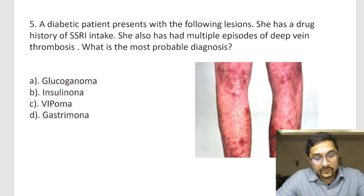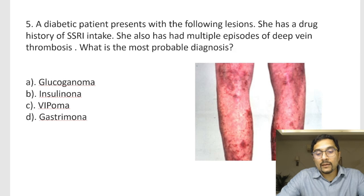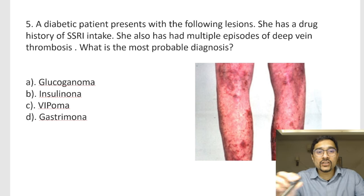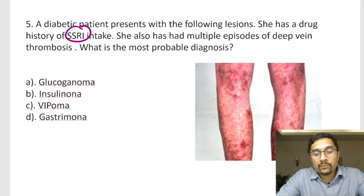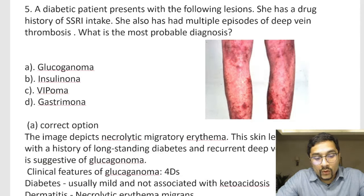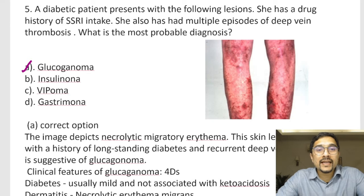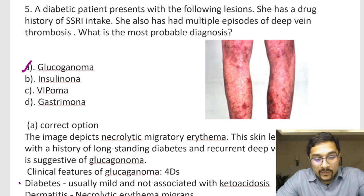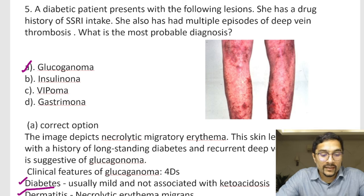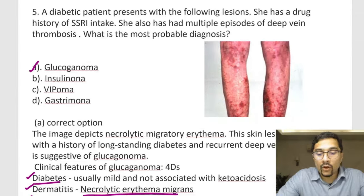The next patient is a diabetic patient with typical rashes, a history of SSRI intake, and multiple episodes of deep vein thrombosis. This is a classical finding of a glucagonoma: you get a necrolytic migratory rash, diabetes, deep vein thrombosis or migratory thrombophlebitis, and depression — which is why the patient was on SSRIs. These four signs are classical of a glucagonoma.